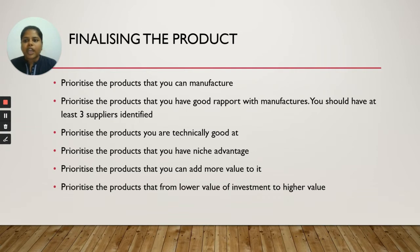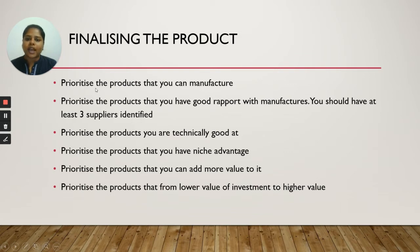You can prioritize the products based on seven criteria. The first one: find which products are so potential for you to choose for export, and list out which products have a good score for you to manufacture or produce by yourself.